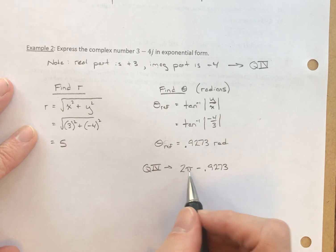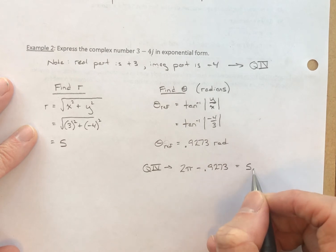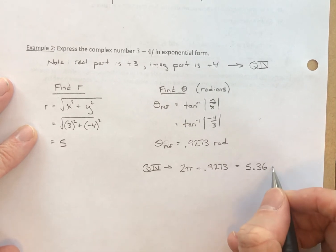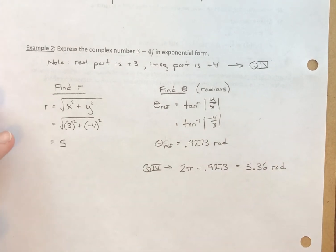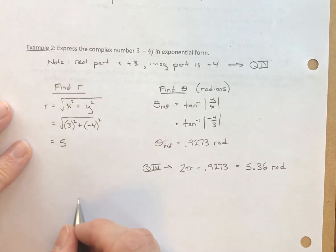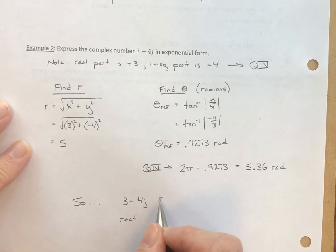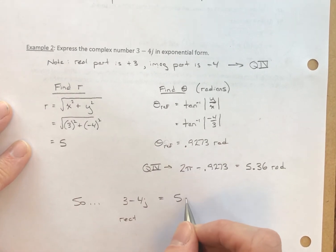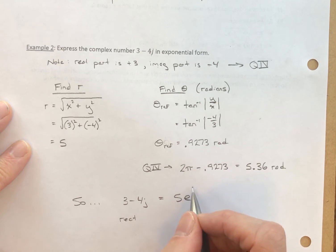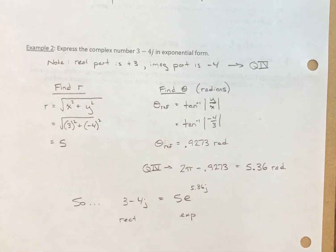We have r equals 5 and theta equals 5.36 radians, so we can put this in exponential form. 3 minus 4j — the rectangular form — is equivalent to 5 times e raised to the 5.36 times j. That is the exponential form.